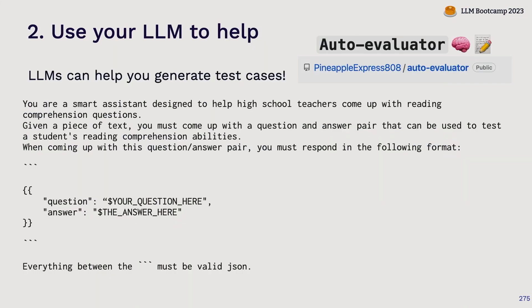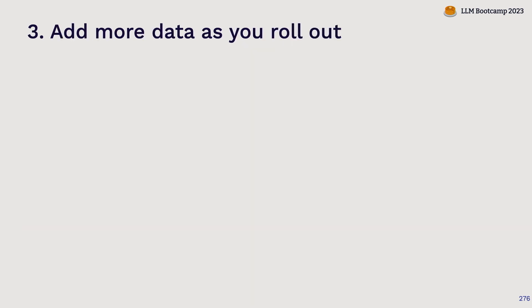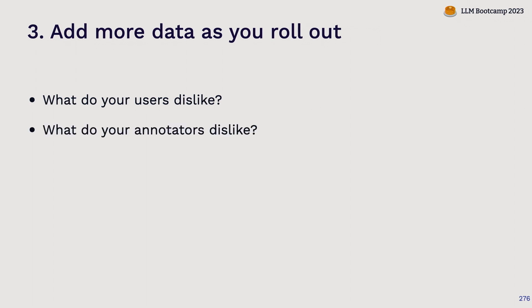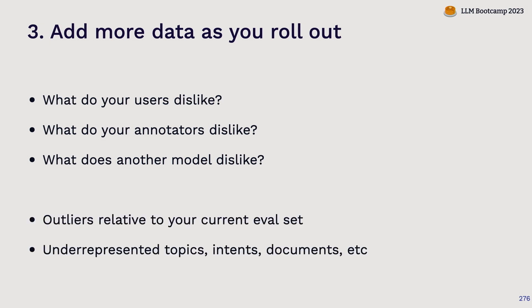To do this faster, you can use your LLM to help. LLMs are pretty good at generating data — not super diverse data, but generating a bunch of examples faster than you might. You can write a prompt to help generate test cases to bootstrap having multiple things to try your prompt on. As you go, you want to expand this dataset and make it more representative of the tasks you care about, in lockstep with how you roll the model out to your user base. You can use signals like what your users dislike, what annotators dislike, what another model flags as wrong, as well as outliers relative to your current evaluation set.